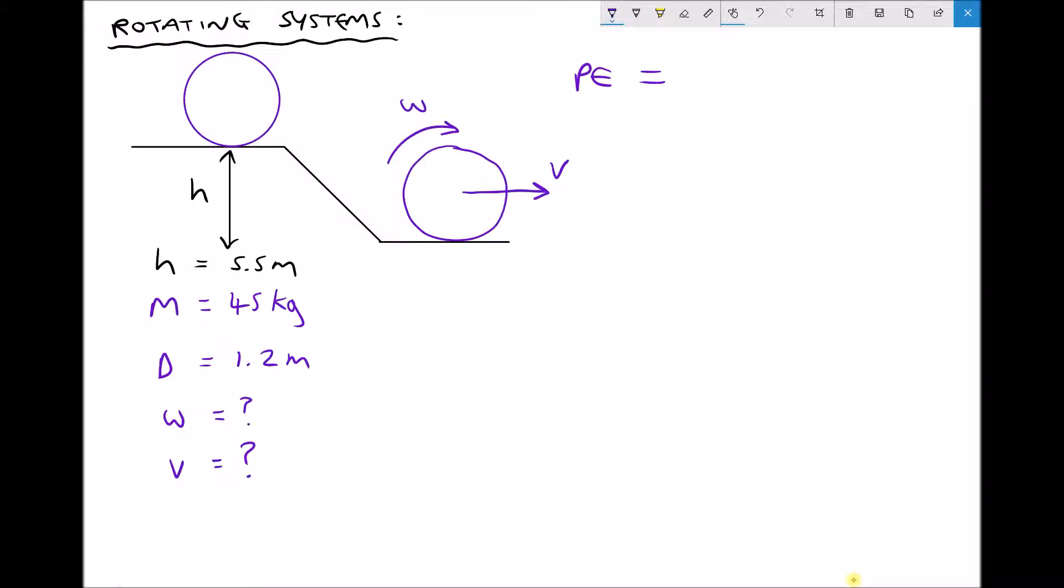So what we need to account for in our energy balance is both linear kinetic energy plus angular kinetic energy. We're assuming that there's no losses, therefore all of the potential energy is being converted to the two forms of kinetic energy. We can substitute the expressions: potential energy is mass times gravity times height, linear kinetic energy is a half mv squared, and angular kinetic energy is a half i omega squared.